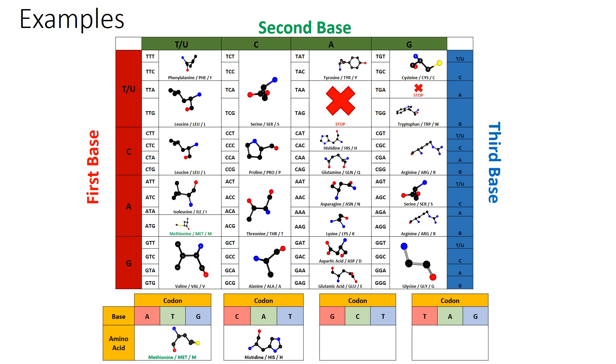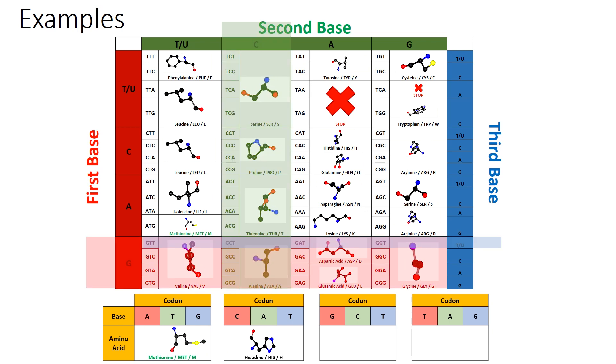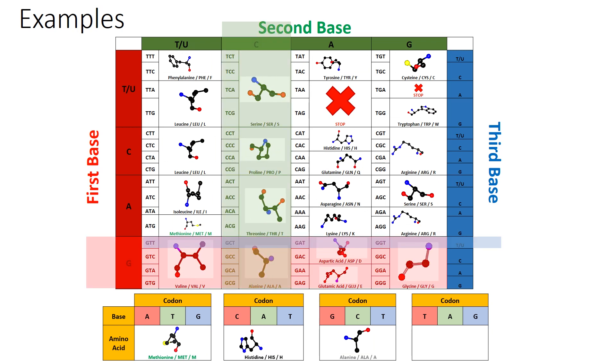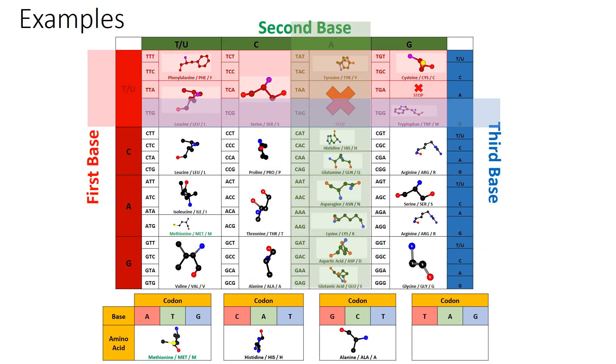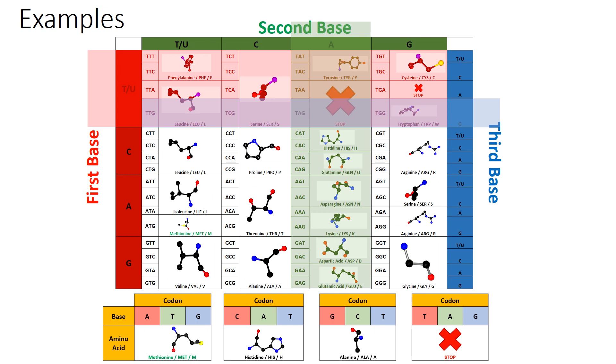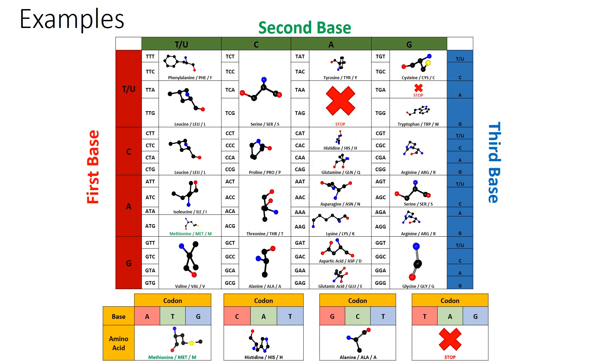For the third example, G, C, T, we get to the amino acid alanine. The final codon, T, A, G, gives the stop instruction, which seems like a good place to end this video.